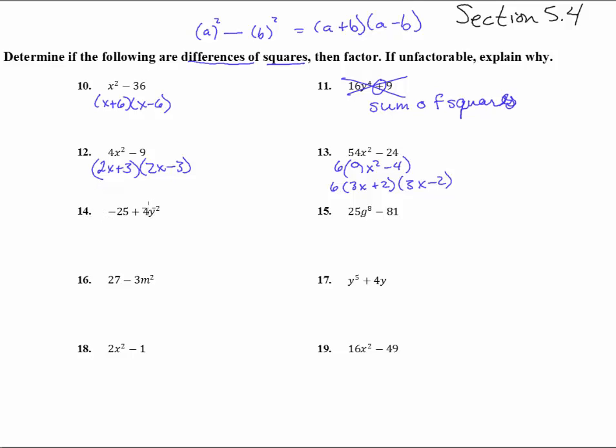Now, here we have a square, 4y squared. Here's a square of 25, but notice that negative is on the front. So I'm going to rewrite it like this. And yes, indeed, it is now a difference of squares. So we have 2y minus 5, 2y plus 5.